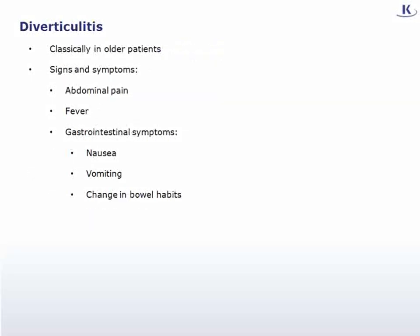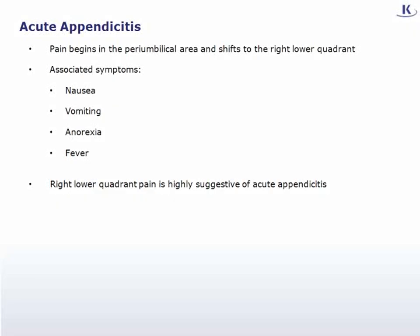Diverticulitis would classically present in older patients; in addition to abdominal pain and fever, it causes gastrointestinal symptoms such as nausea, vomiting, and change in bowel habits. The pain in acute appendicitis usually begins in the periumbilical area and then shifts to the right lower quadrant, associated with nausea, vomiting, anorexia, and fever. Pain located in the right lower quadrant is highly suggestive of acute appendicitis.